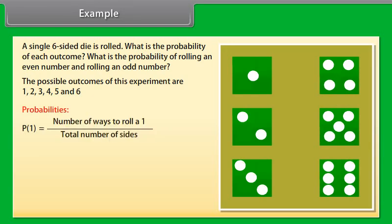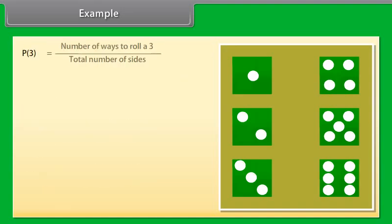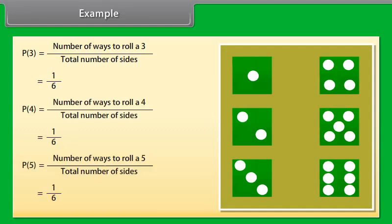Now let's find probabilities. Probability of 1 is number of ways to roll a 1 by total number of sides, is equal to 1 by 6. Probability of 2 is number of ways to roll a 2 by total number of sides, is equal to 1 by 6. Similarly, the probability of 3 is number of ways to roll a 3 by total number of sides, is equal to 1 by 6. In the same way we will find the probabilities of 4, 5 and 6.